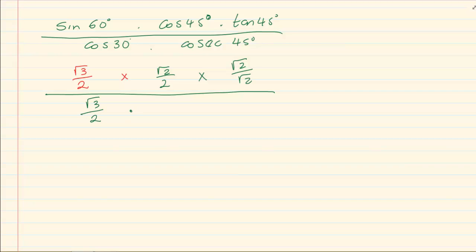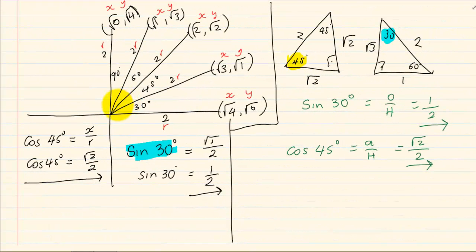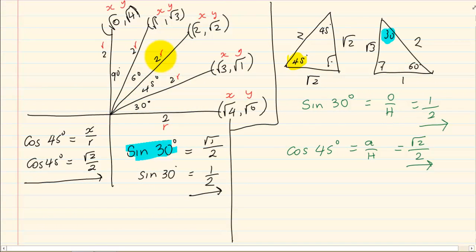Times cosec 45. Cosec is R on our 45 degree, it's R over Y. So it's 2 over root of 2.